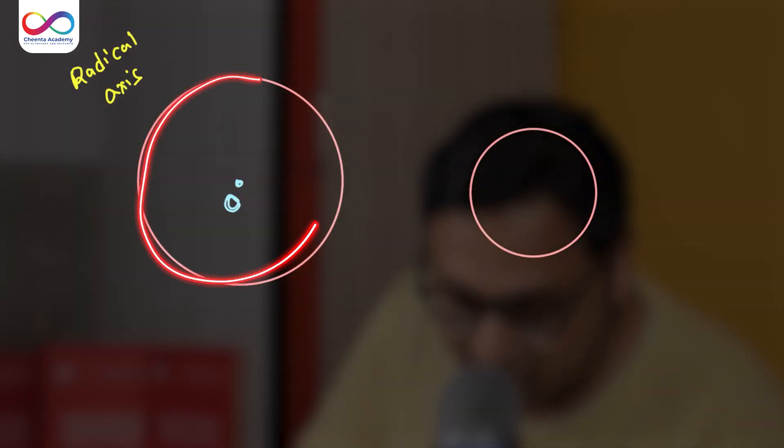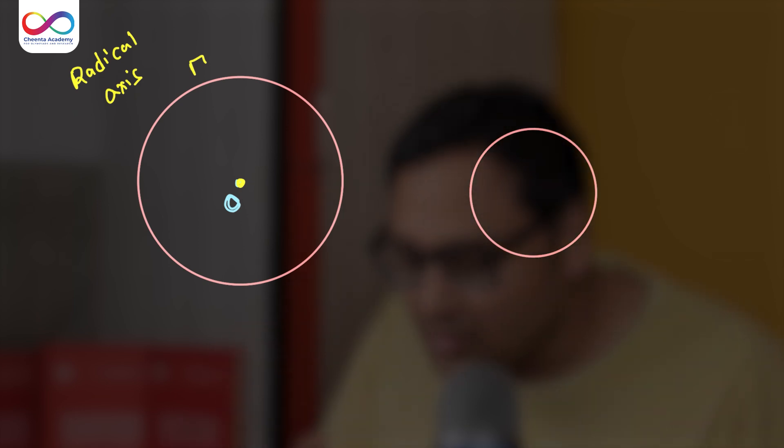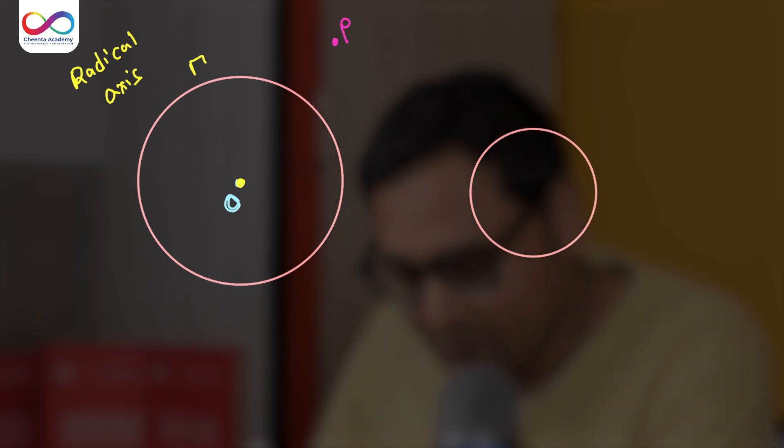Suppose you have a circle, let's call it gamma, and suppose the center of the circle is O. Now you take any point on the plane of the circle - maybe the point is inside the circle, on the circle, or outside the circle. Let's take a point outside P. What we are trying to do here is measure the distance of P from the center of the circle or from the circle itself. That is one way to think about it.